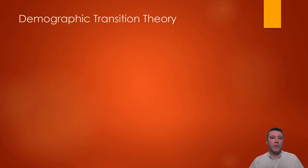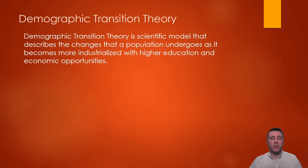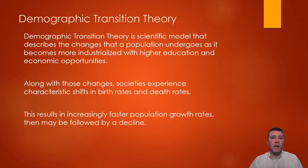In the early 1900s, demographers in America and France made similar observations about demographic patterns and the growth of human populations. It wasn't until 1945 that American demographer Frank Notstein produced a formal model of demographic transition. Demographic transition theory has since become one of the most widely accepted ideas in social science. The model identifies the changes a population experiences as it becomes more educated and industrialized, and as economic opportunities expand, they also experience characteristic changes to birth and death rates.